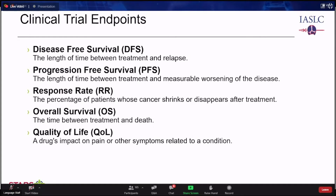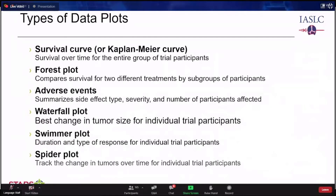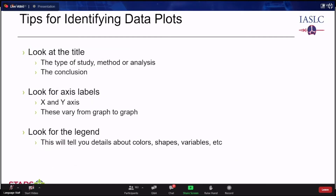Heute besprechen wir mehrere verschiedene Diagrammarten: die Überlebenskurve (auch Kaplan-Meier-Kurve), Forest Plots (Walddiagramme), unerwünschte Ereignisse (Adverse Events), Wasserfalldiagramme, Swimmer Plots und Spinnendiagramme. Zu jedem Diagramm erläutere ich, was es adressiert. Es gibt zudem einige grundlegende Tipps zur Identifizierung von Datenplots – vergleichbar mit dem Kartenlesen vor der GPS-Ära.